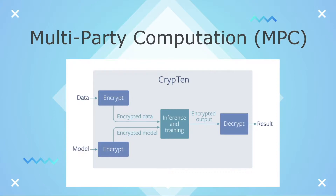Each part is worked on by a separate party, and then each output is put together. Because the outputs aren't shared between parties, none of them can deduce the original data input, keeping it all secure. In Krypton, both the data and the model are encrypted using MPC.